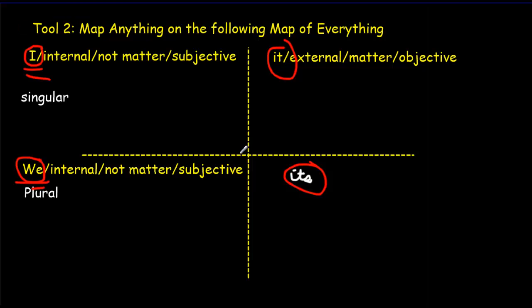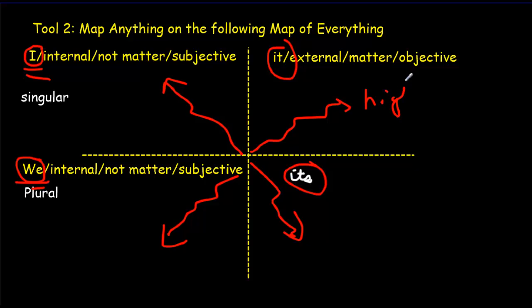So heading back to the map of everything, what we're going to do as we move away from the origin, we're going to represent things as being of a higher order.